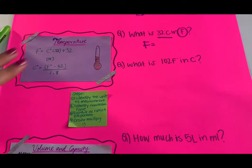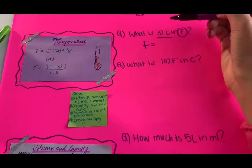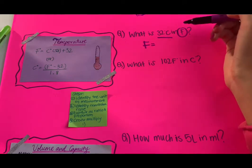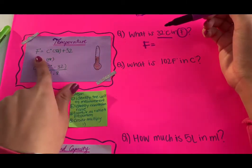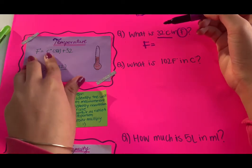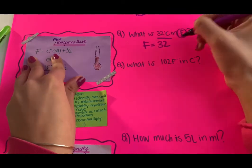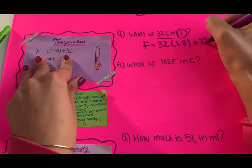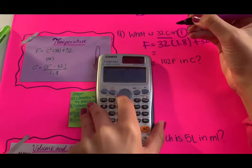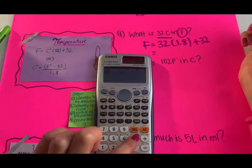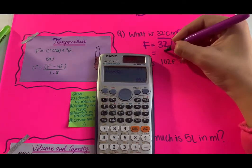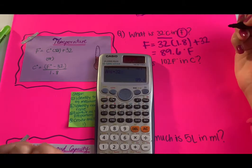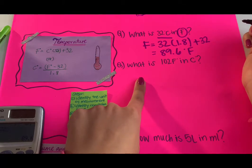In the temperature section we only have two equations to use. The first question: what is 32 degrees Celsius in Fahrenheit? We use the Fahrenheit equation: F = C × 1.8 + 32. Replace C with 32, so 32 multiplied by 1.8 plus 32. Bring your calculator: that gives you 89.6 degrees Fahrenheit.